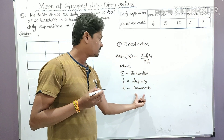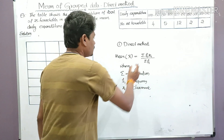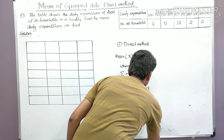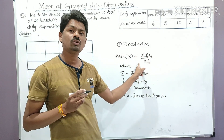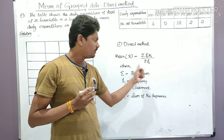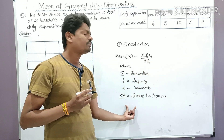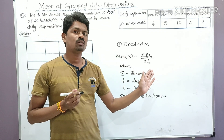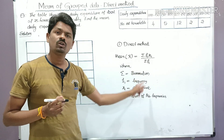The class mark is the average of each class interval. By finding the average of each class interval we can get the class mark. Σfᵢ is the sum of all the frequencies. So this is the formula: mean x̄ = Σfᵢxᵢ ÷ Σfᵢ, where Σ = summation, fᵢ = frequency, xᵢ = class mark, and Σfᵢ = sum of all frequencies. You simply write the formula and explain the terms.